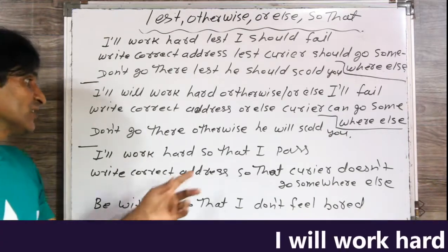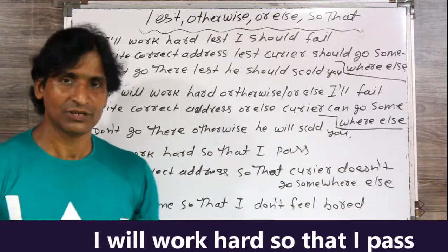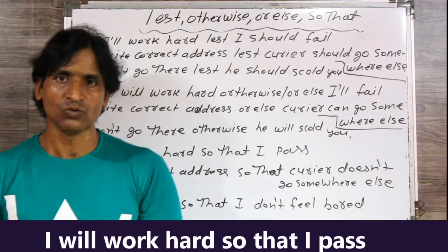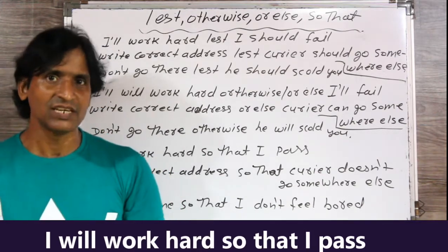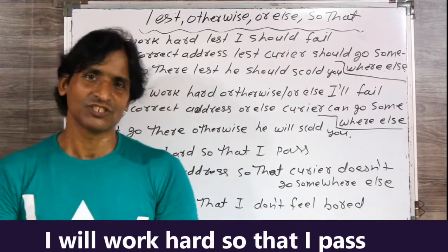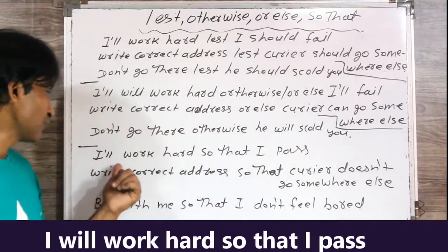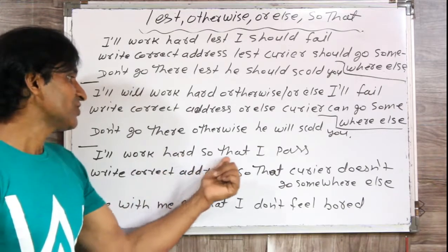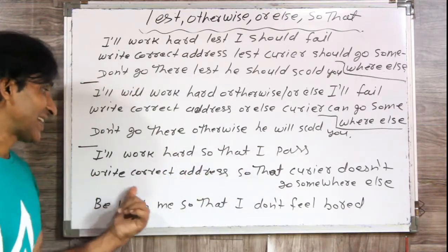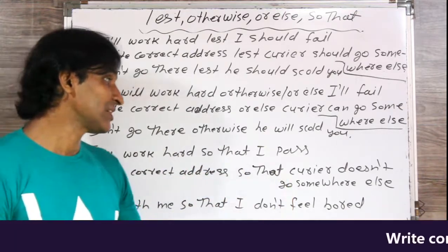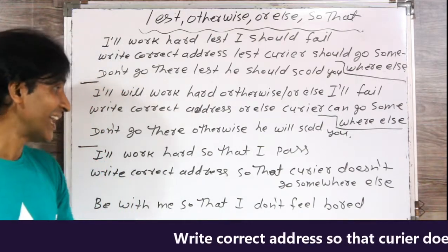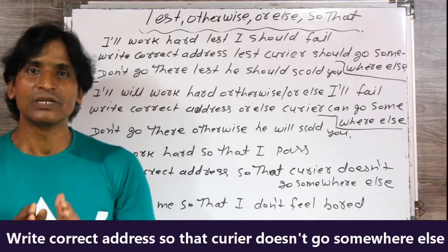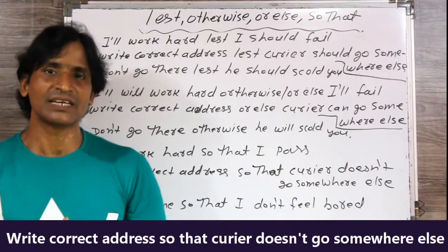'I will work hard so that I pass.' मैं कठिन मेहनत करूँगा, ताकि मैं पास हो जाऊँ. Second sentence: 'Write correct address so that courier doesn't go somewhere else.' सही पता लिखो, ताकि courier कहीं और न जा सके.